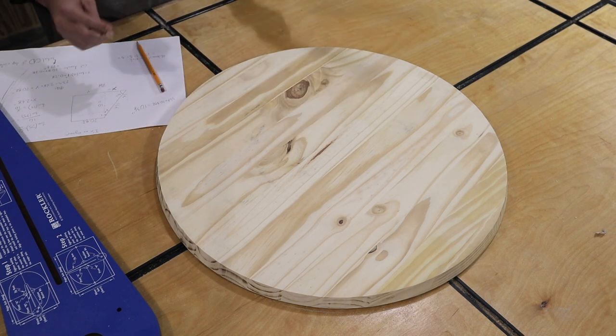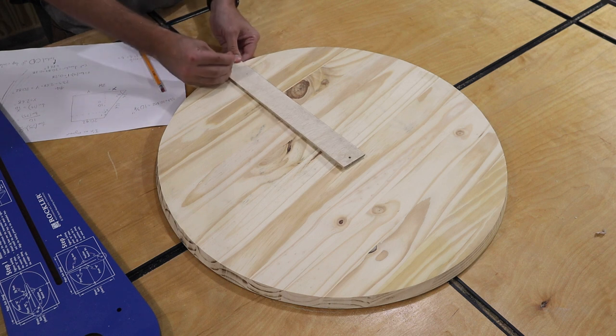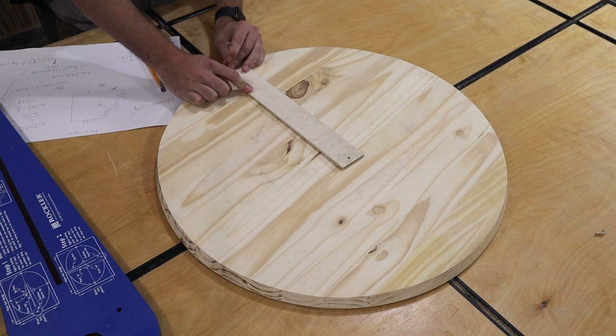So what I've done is created a rudimentary compass made out of two holes and a piece of quarter-inch plywood, and with this, I can find the center of my circle.